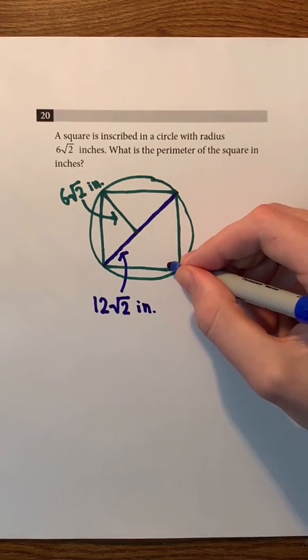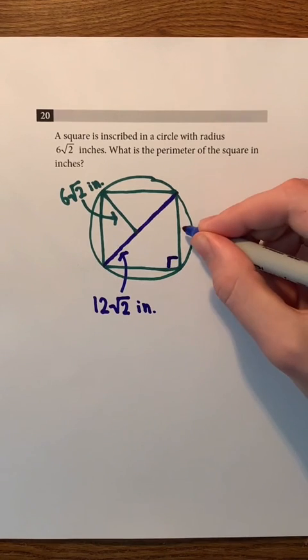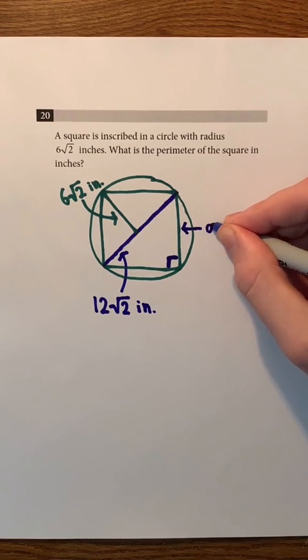Also, remember that all of the angles of a square are 90 degrees, and each side of a square has the same length. So, let's label that length A.